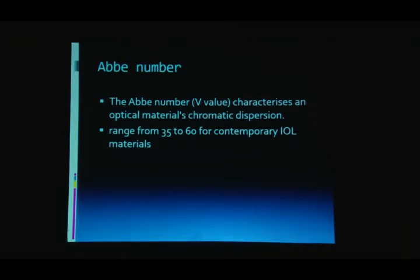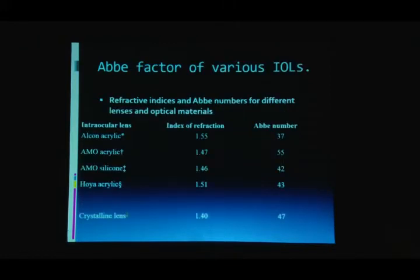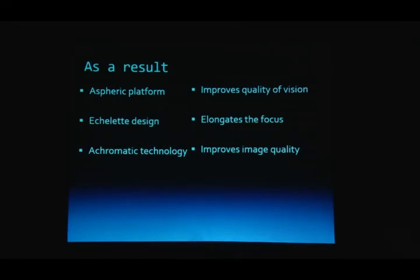The Abbe number measures optical material dispersion — higher means less chromatic dispersion. Available IOL materials range from Abbe numbers of 35–60; most IOLs on the market range from 37–47, while the acrylic from AMO (no financial interest declared) reaches 55. This lens on an aspheric platform with negative spherical aberration of -0.27 and the echelon diffractive design achieves maintained image quality. The modular transfer function graph demonstrates very good image quality at the retina for this lens.